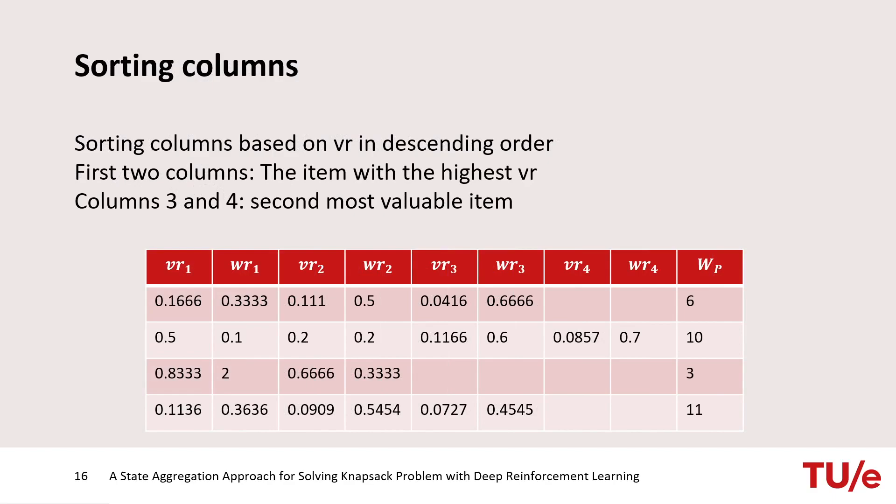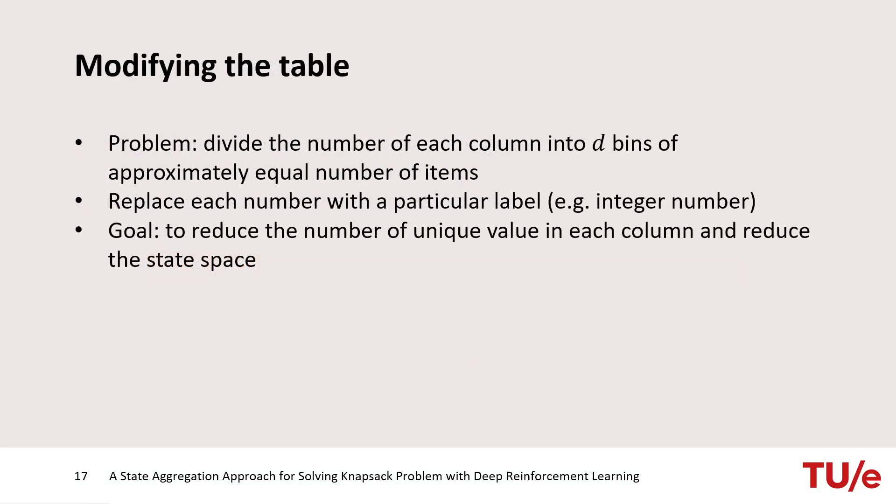Then, the columns are sorted in the way that the item with the highest normalized value locates in the first two columns. The item with the second highest normalized value in the second two columns and so on. In this stage, we know that values and weights of the most valuable item of each instance locate in the first two columns. Now, we want to map the values of each column in the way that the number of unique values of that column is reduced. A set of bins is defined on the values of each column and the goal is to learn the most appropriate number of bins in order to reduce state space. The values in a bin are mapped to its label and the assumption is that bins have approximately equal number of items.